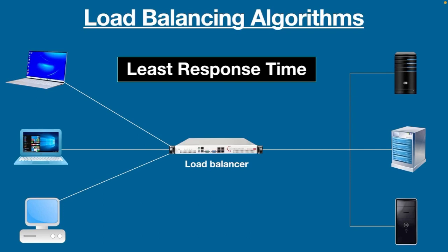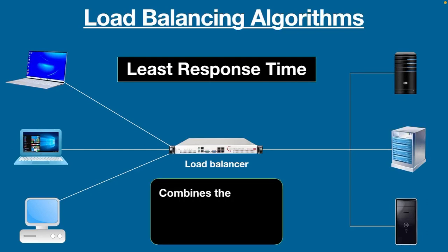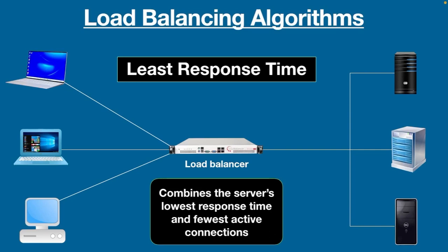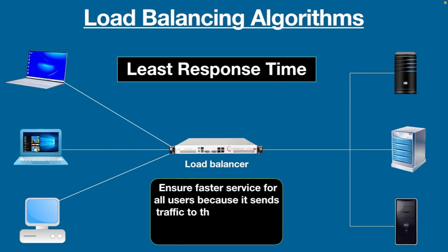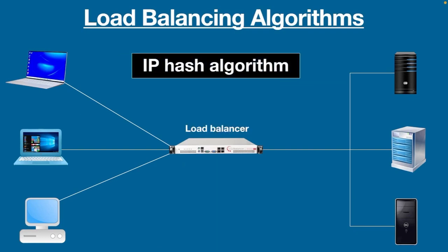The fifth algorithm is Least Response Time. Least response time is the total time that a server takes to process incoming requests and send a response. This method combines the server's lowest response time and fewest active connections to decide the best server. Once decided, the load balancer routes traffic to that server. This algorithm ensures faster service for all users because it sends traffic to the servers with the quickest response time.